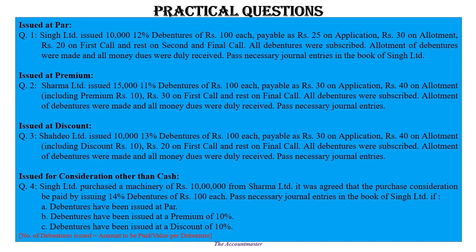Question 4: Issue of debenture for consideration other than cash. Singh Limited purchased machinery of Rs.10 lakh from Sharma Limited. It was agreed that the purchase consideration be paid by issuing 14% debentures. Pass necessary journal entries in the books of Singh Limited if debentures are issued at par, at premium, and at discount. First pass the entry for purchasing the machinery, then pass the debenture issue entry. To calculate number of debentures, divide the amount payable to Sharma Limited by the price per debenture.